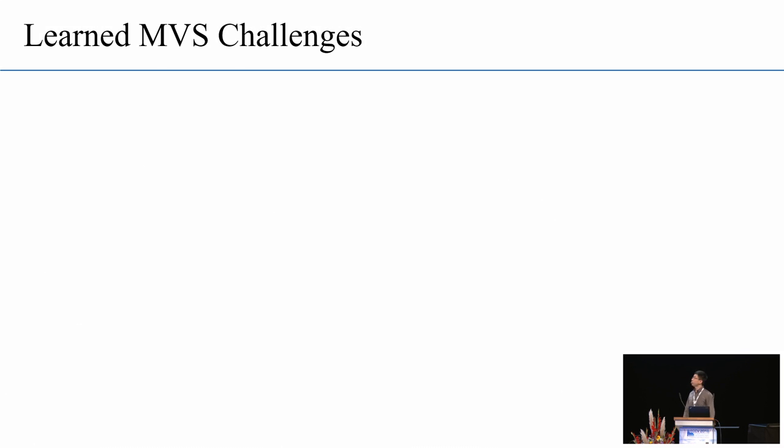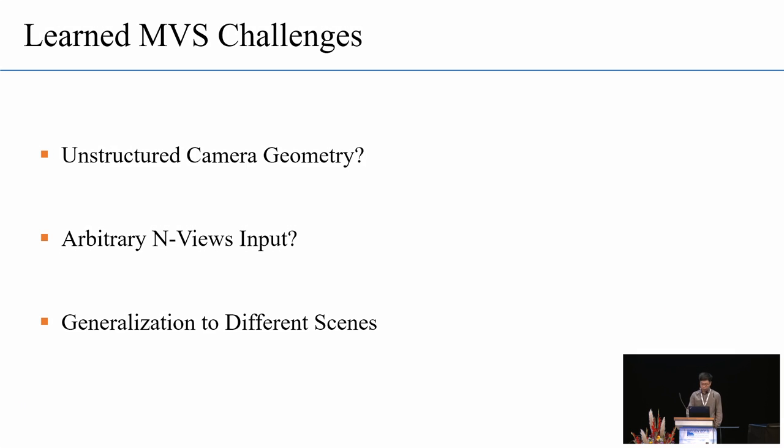For the learning-based multiview stereo, there are mainly three challenges. The first one is the unstructured camera geometry. Unlike the two-view stereo problem where the images are rectified in advance, multiview stereo needs to consider the camera geometry of each image input. So the biggest problem is how to combine the deterministic camera geometry with the deep learning framework. And the second challenge is the unknown image input number. How should we design a network for arbitrary numbers of image input? And the third challenge is the generalization ability of the network. Because the multiview stereo training data is rather limited when compared to other computer vision tasks.